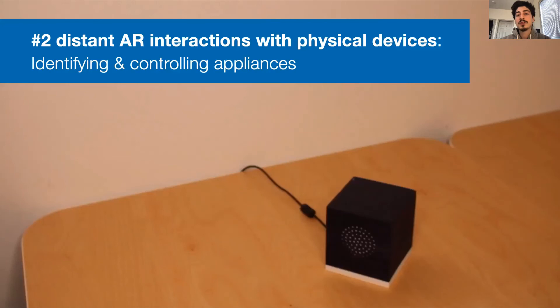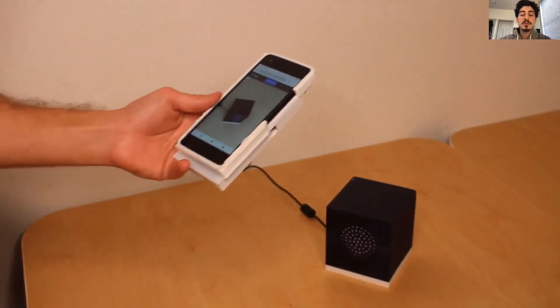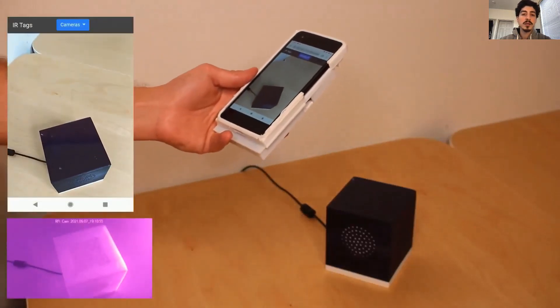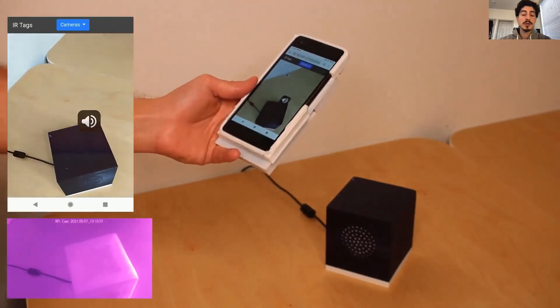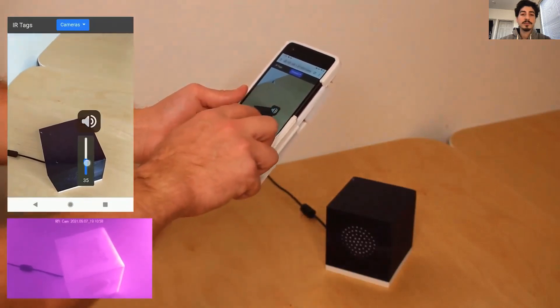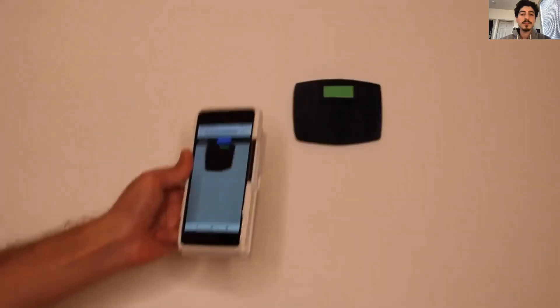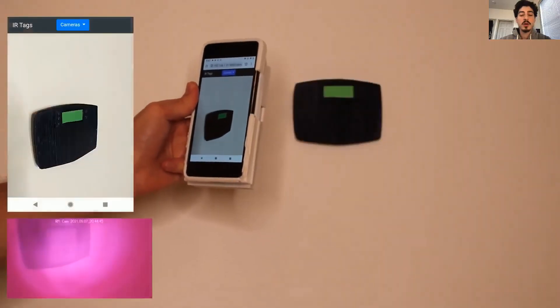In our second application, I want to show you how infrared tags can be embedded into devices to show the corresponding controls to the user. Here, a control menu is shown in the AR view, where the user can adjust the volume of the speaker, or set a temperature for the thermostat.